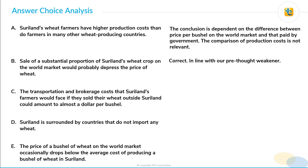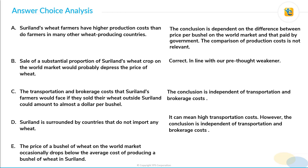Choice C: the transportation and brokerage costs that Suriland farmers would face if they sold their wheat outside Suriland could amount to almost a dollar per bushel. We already discussed that the conclusion is not dependent on transportation and brokerage costs — they have already been addressed and taken into account. As per the author, after these costs have been taken into account, the farmers will still get that one dollar profit. So choice C is not correct. Choice D: Suriland is surrounded by countries that do not import any wheat. All I can extract from choice D is that it implies higher transportation costs, since they will have to export to farther countries. But as discussed with choice C, the conclusion is independent of transportation and brokerage costs, and hence choice D will also not have any impact on the conclusion.